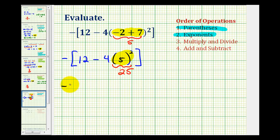So now we have the opposite of the quantity 12 minus 4 times 25. Now we're still simplifying inside the outermost brackets of parentheses.